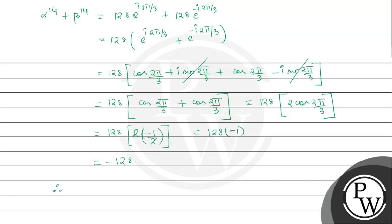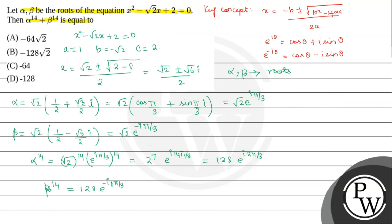So we got alpha power 14 plus beta power 14 as minus 128. Option B is the correct option. Hope you understood the solution. Thank you, Bachchano.